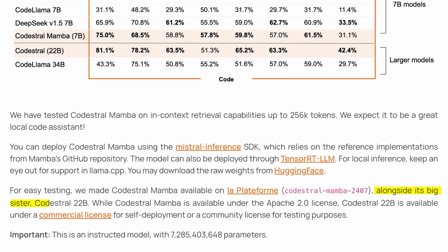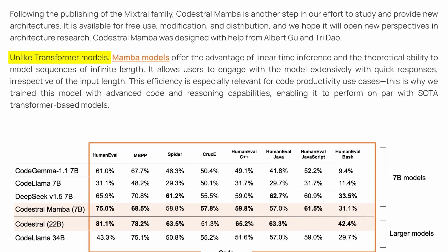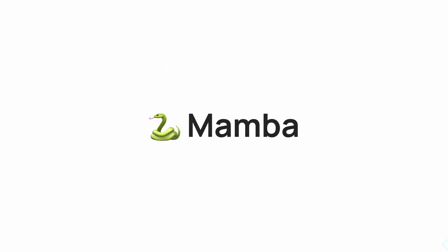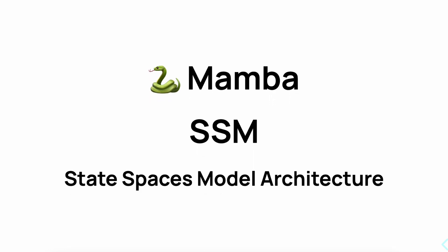They say it's the smaller sister of the Codestral 22b model, based on the Mamba architecture, which is different from the GPT architecture that almost every model uses. Mamba is based on the SSM, or State Spaces, architecture.